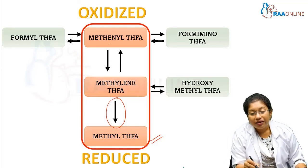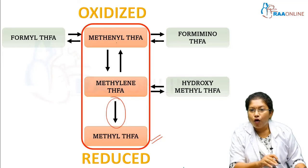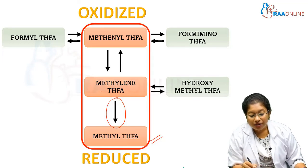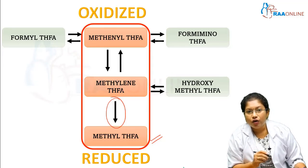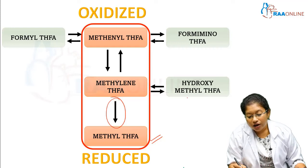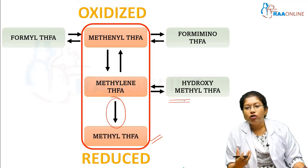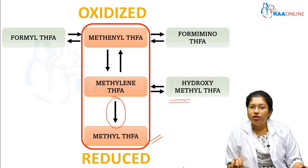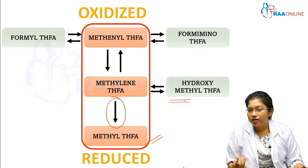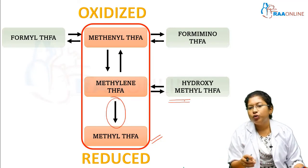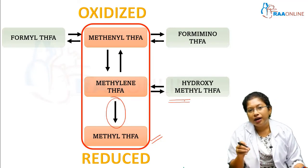You can get methanol from formyl and formimino. Likewise, methylene tetrahydrofolic acid is formed from hydroxymethyl tetrahydrofolic acid, and all these compounds are reduced to methyl tetrahydrofolic acid.